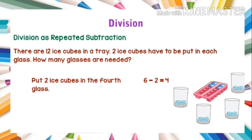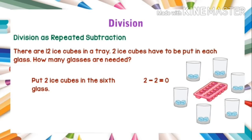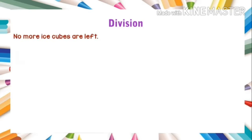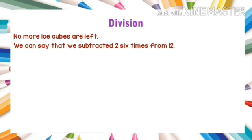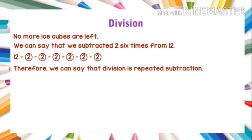Put two ice cubes in the fourth glass: 6 minus 2 equals 4. Put two in the fifth glass: 4 minus 2 equals 2. Put two in the sixth glass: 2 minus 2 equals 0. We subtracted two, six times from 12. Therefore, division is repeated subtraction. Thus, 12 divided by 2 is equal to 6, so we need six glasses.